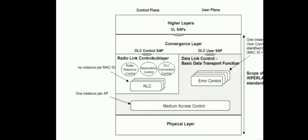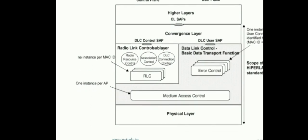The Data Link Control (DLC) layer has two planes: the control plane and the user plane. The higher layer interface is through CL SAPs — where SAP stands for System Application and CL stands for Convergence Layer. The convergence layer is divided into DLC Control System Application and DLC User System Application.